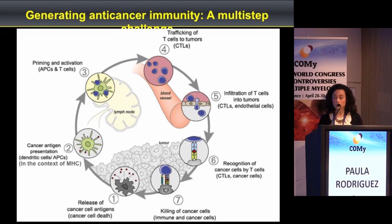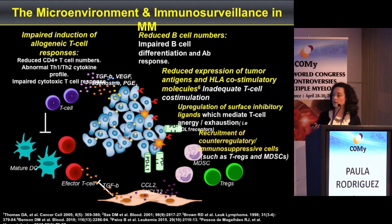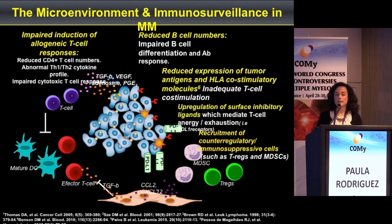Unfortunately, tumors can display a variety of mechanisms that allow them to evade immune control, and multiple myeloma is one example of impaired immune surveillance. The mechanisms underlying this impairment are shown in the slide. First, there is an impaired induction of allogenic T cell responses in multiple myeloma patients, in part due to a reduced number of CD4 T cells and an abnormal TH1/TH2 cytokine profile. There is also a reduction in the B cell compartment, an impaired antibody response, and reduced expression of tumor antigens.